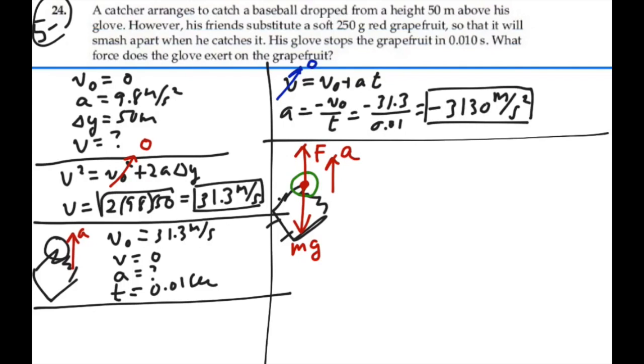So we now have that the summation of all the forces in the y direction is equal to MA, and that's going to equal F minus MG. So we have that F is equal to MA plus MG.